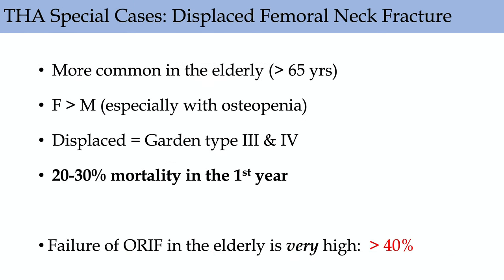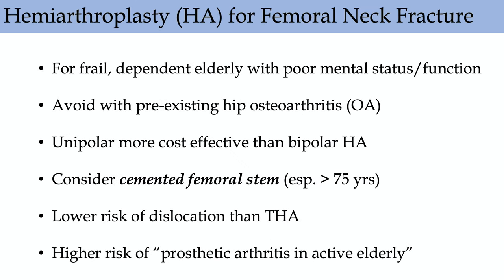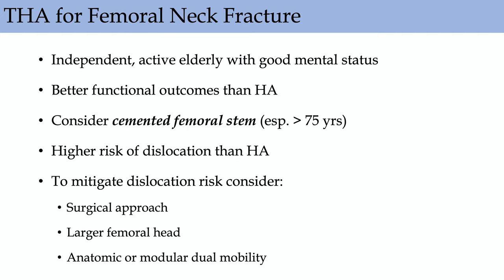For displaced femoral neck fractures — more common in elderly females — the displaced types are Garden 3 and 4, where you consider hemi versus total arthroplasty. These patients have about 20 to 30% mortality within the first year, and failure is very high without arthroplasty. Hemiarthroplasty is for frail, dependent patients with poor mental status — unipolar is more effective than bipolar; stems should be cemented; lower dislocation risk with a larger head. For younger, active patients — especially with pre-existing hip arthritis — total hip arthroplasty gives better functional outcomes. Consider dual mobility to mitigate dislocation risk.